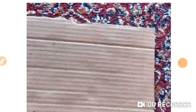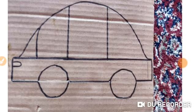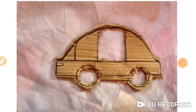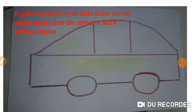Quickly grab these things and let's get started. Take a piece of carton and draw the outline of the car, then cut the middle part of the car and cut the inside circles of the wheels. Cut the whole car body from the carton piece. Now draw the same size of car on white paper and then color it with yellow color. And if yellow paper is available, you can draw the car on yellow paper.